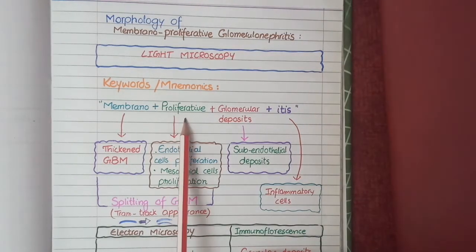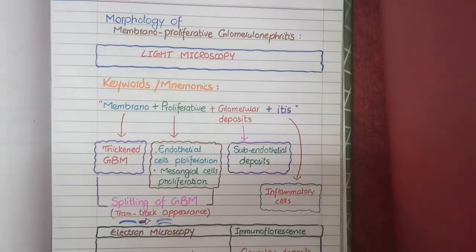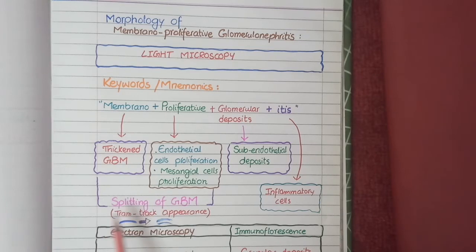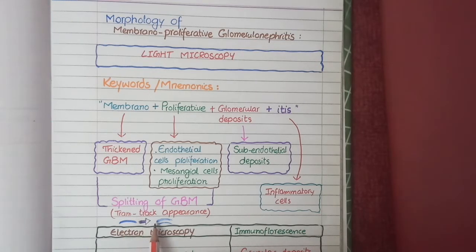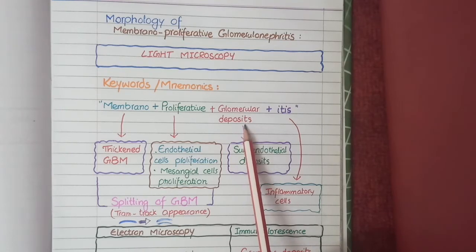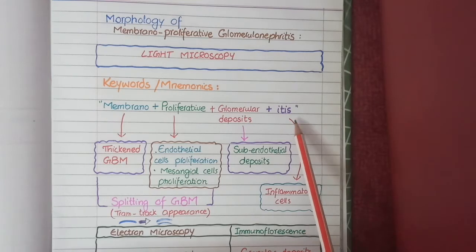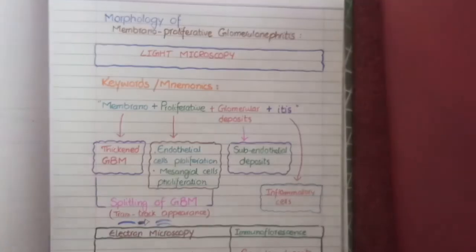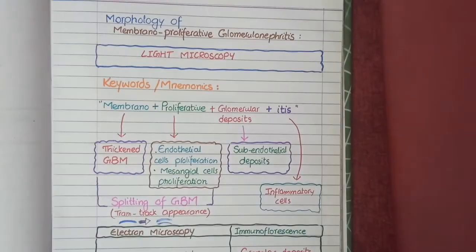The second keyword, proliferative, means there will be proliferation of endothelial cells and mesangial cells, so you will see thickened basement membrane with proliferating endothelial and mesangial cells. As mesangial cells proliferate, their processes get interposed inside the basement membrane, causing splitting of the basement membrane. This splitting creates a double contour known as the tram track appearance. Due to all these elements of proliferation the lobular nature of the glomeruli becomes accentuated, making them appear hypercellular and more lobular.